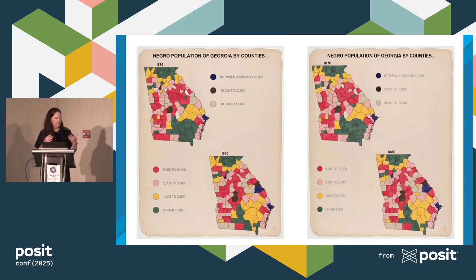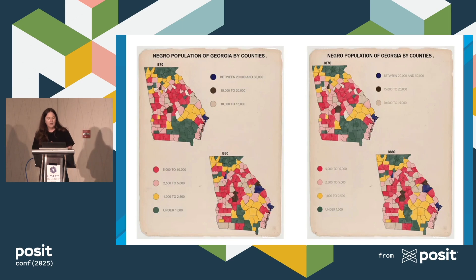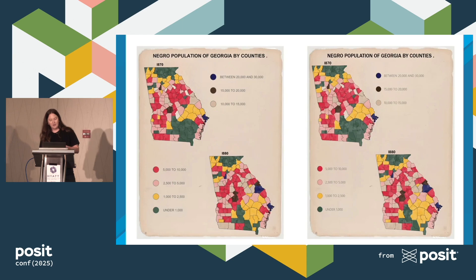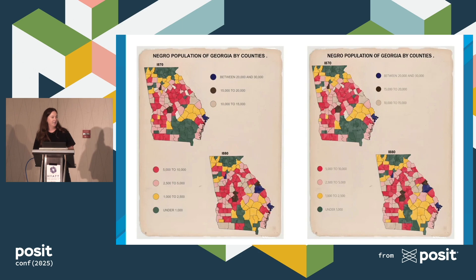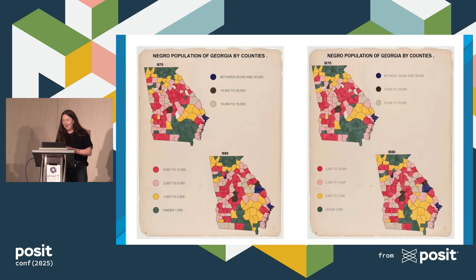I'm starting the presentation a bit unconventionally and throwing this slide at you with pretty much no context. One of these visuals was produced in R, and the other was produced in Python. Can you raise your hand if you think the visual on the left was produced in R? Now raise your hand if you think the visual on the left was actually produced in Python. I see a lot of hesitancy — that's good. That proves my point later. I'm actually not going to tell you until the end.